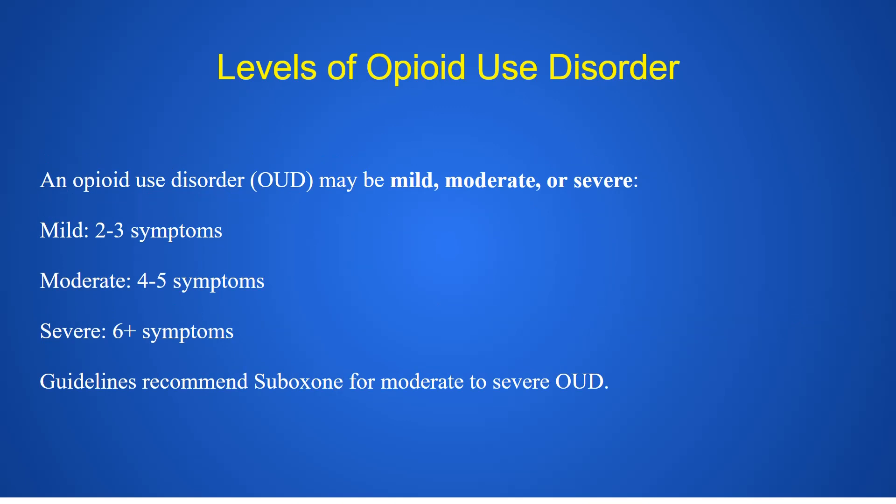Opioid use disorder can be mild, moderate, or severe. Mild is two or three symptoms out of eleven; moderate is four or five; severe is six or more. The guidelines recommend Suboxone for moderate or greater — four or more symptoms — because someone with mild disorder may be abusing the opioid but may not yet be physically dependent.